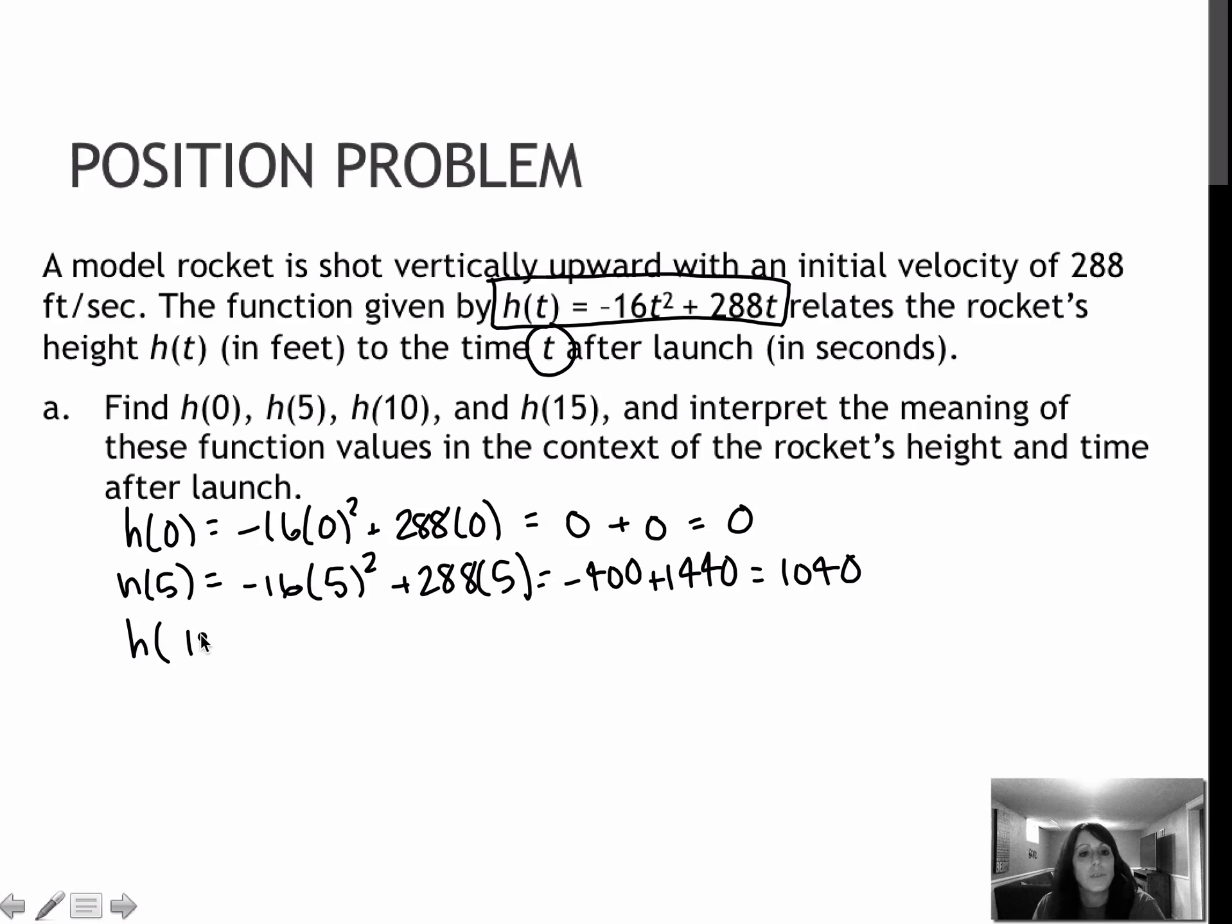h(10) is next. So negative 16 times 10 squared. Remember when you're plugging this into your calculator, you take the 10 squared first. That gives me negative 1600 and positive 2880 for 1280, which means at time of 10 seconds, the height of the rocket is 1280 feet. So as we can see, obviously at 0 seconds, it's obviously increasing in height.